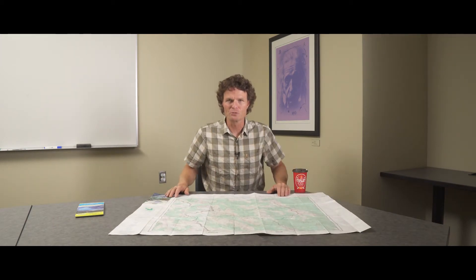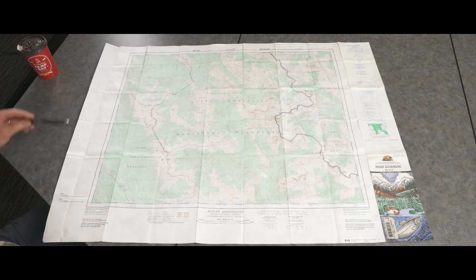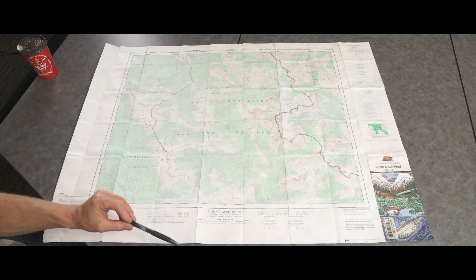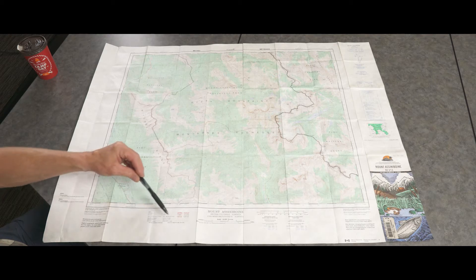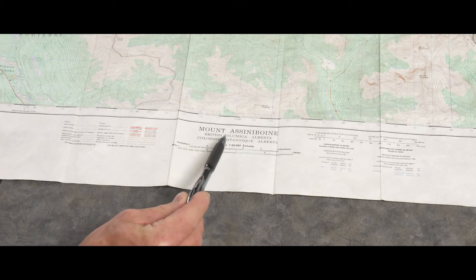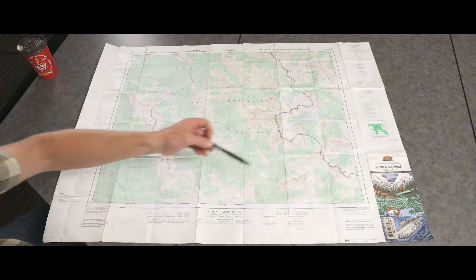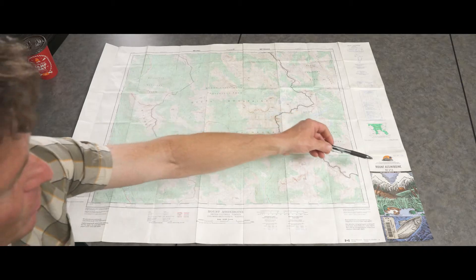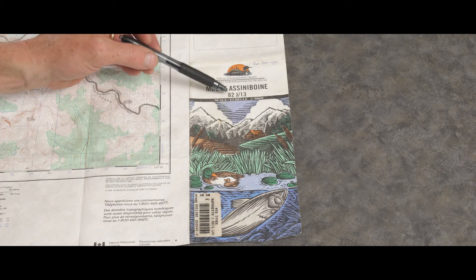Let's talk about the Natural Resource Canada maps. There's all sorts of very important information on these NRS maps. The name of the map is shown down here in the middle, and then the map code — over here we can see it's 82J13. That's the code of the map.